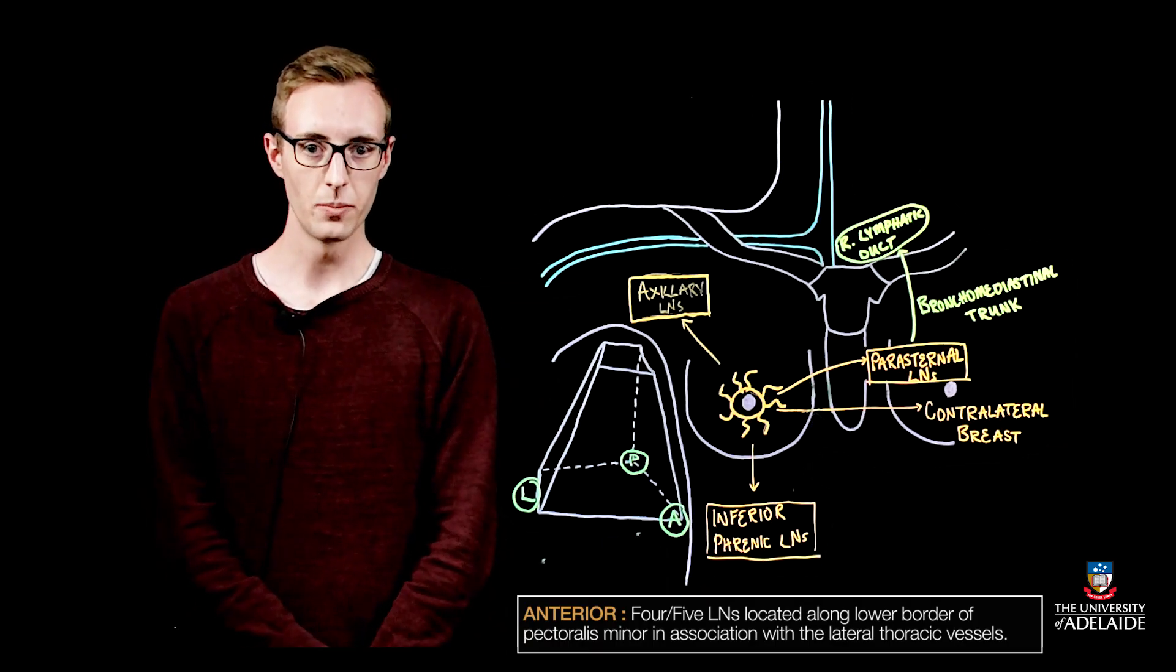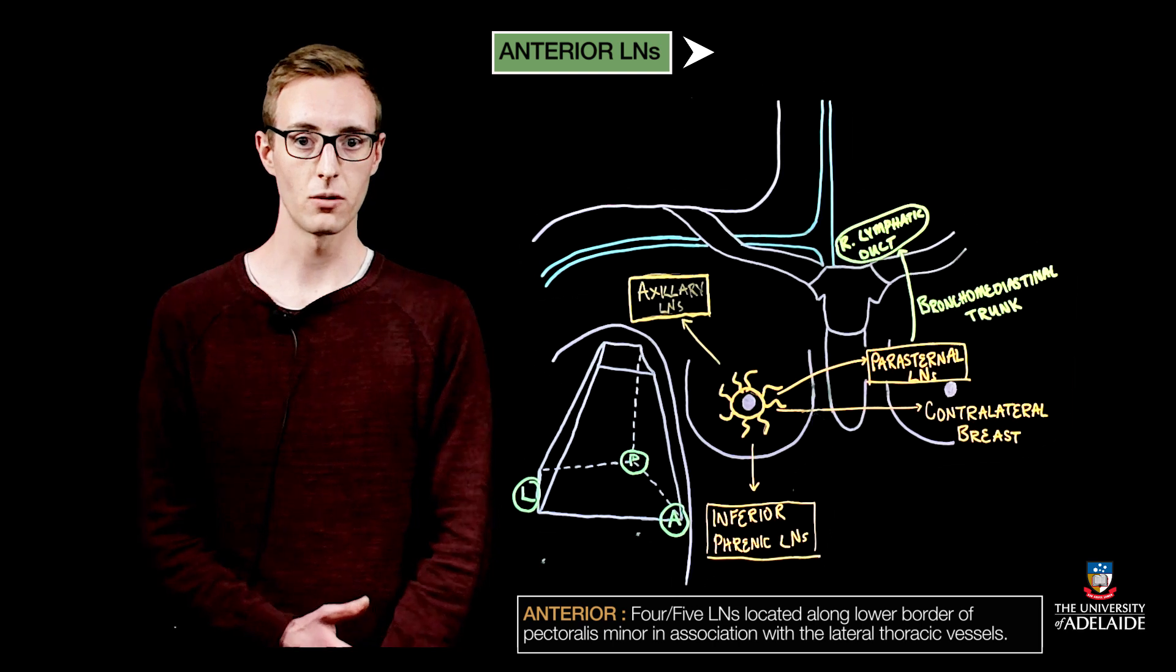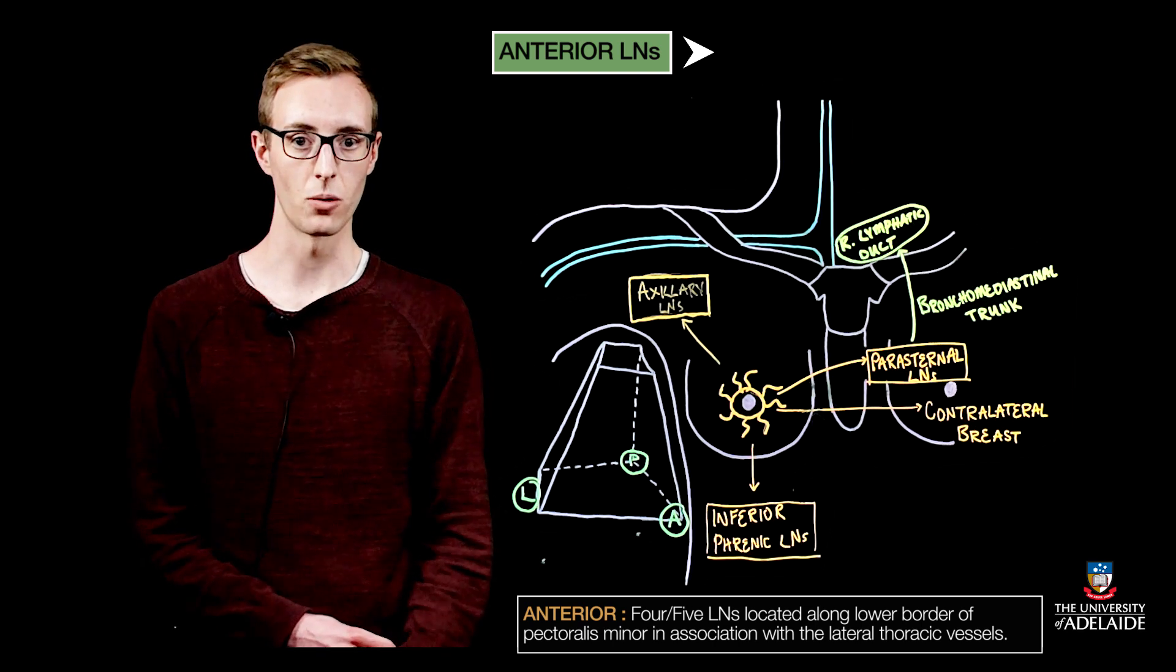The anterior or pectoral group is the group that receives the majority of lymph from the breast. It is therefore the group that's going to first receive metastatic cells from breast cancer in most cases.